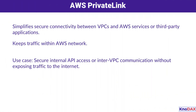Moving on, we have AWS PrivateLink. This simplifies secure connectivity between your virtual private clouds, or VPCs, and AWS services, or even third-party applications. What's remarkable here is that your traffic remains entirely within the AWS network, ensuring secure communication. This is especially useful for internal API access or inter-VPC communication without exposing traffic to the public internet.